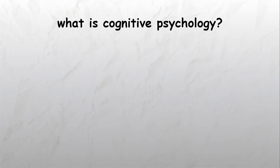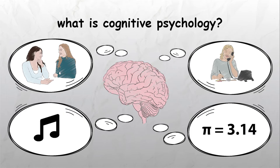What is cognitive psychology? Cognitive psychology studies our mental processes, or cognitions. These mental processes that cognitive psychologists focus on include memory, perception, thinking, and language.